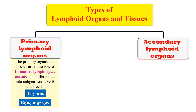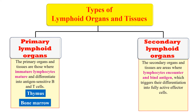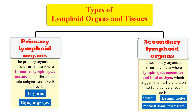The secondary lymphoid organs are those organs in which these mature lymphocytes encounter the antigen and ultimately bind that antigen and trigger their differentiation into fully active effector cells. So, in the primary lymphoid organ the lymphocytes mature, while in the secondary lymphoid organ these mature lymphocytes encounter and bind with the antigen. The secondary lymphoid organs include spleen, lymph nodes, and mucosal associated tissues.